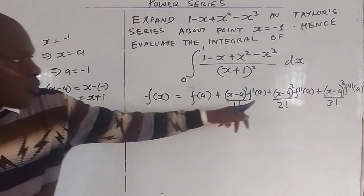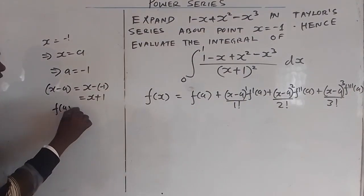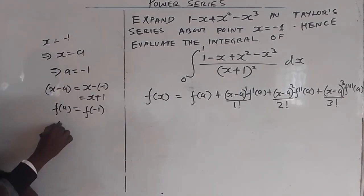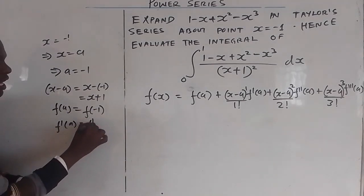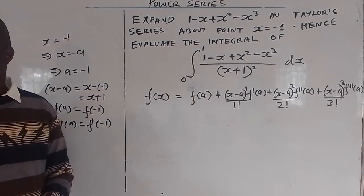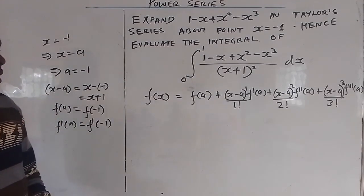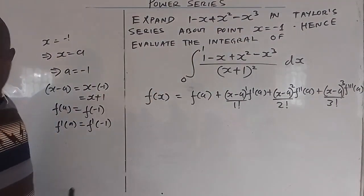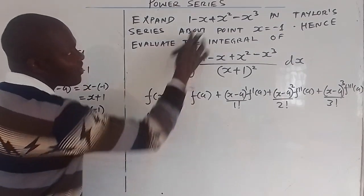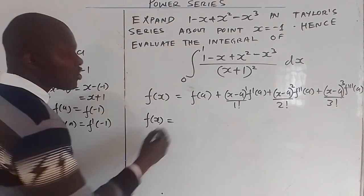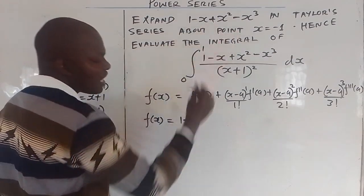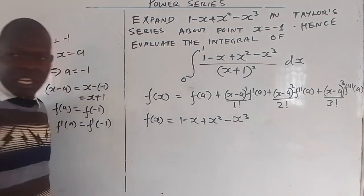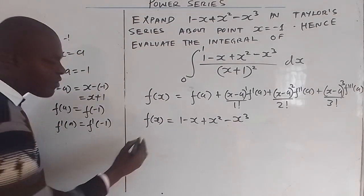So x minus a equals x minus negative 1, which is x plus 1. This bracket where we have x minus a is going to be x plus 1. And f of a becomes f of negative 1, because a is negative 1. When you have f prime of a, that is f prime of negative 1. Now let us start. What is f of x? The function is 1 minus x plus x squared minus x cubed.